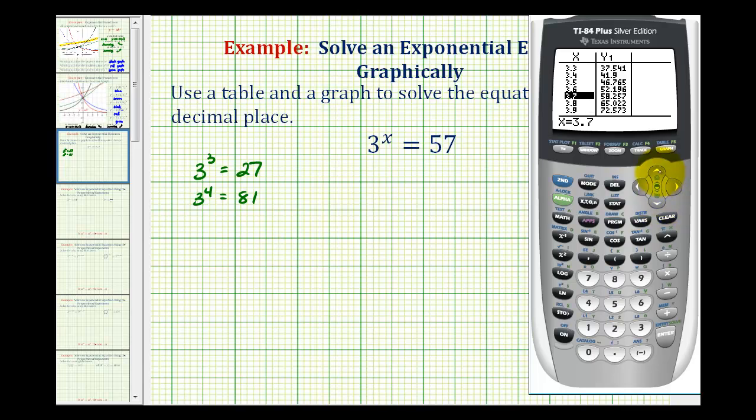Notice that x equals 3.7, we have a y value that's approximately 58.257, which is the closest y value to 57, at least to one decimal place. So our solution will be approximately 3.7.